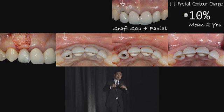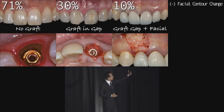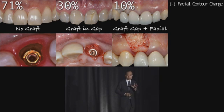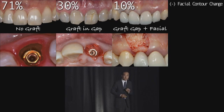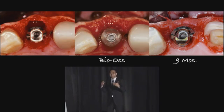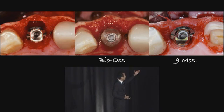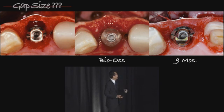So why is that, and how does it affect gap size? This is basically the data right here. I'm not here to tell you what to do — it's up to you. But based on my knowledge in 2013, I'm going to graft inside and outside. Looking at this case, simply putting bone graft in the gap does not solve all the problems, because over time the buccal plate still collapses.